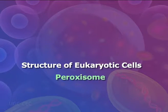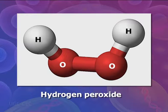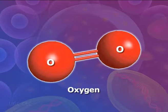Peroxisomes are membrane-bound packets of oxidative enzymes. In animal cells, peroxisomes protect the cell from its own production of toxic hydrogen peroxide. The oxidative enzymes in peroxisomes break down hydrogen peroxide into water and oxygen. Most of the organelles and other parts of the cell are common to all eukaryotic cells.